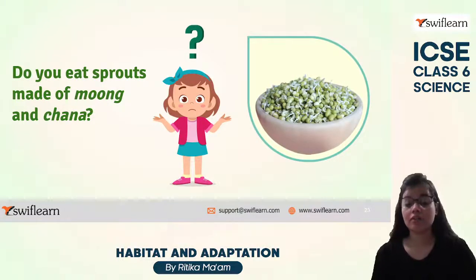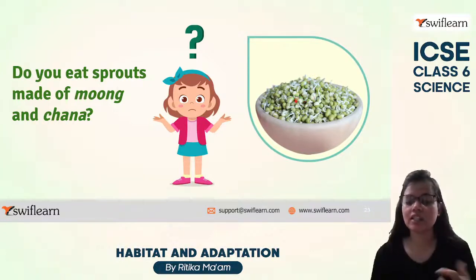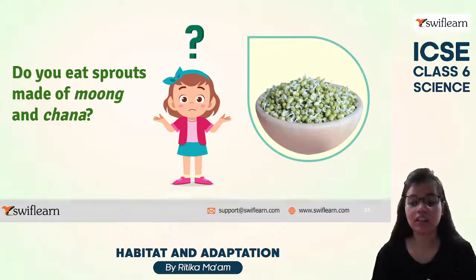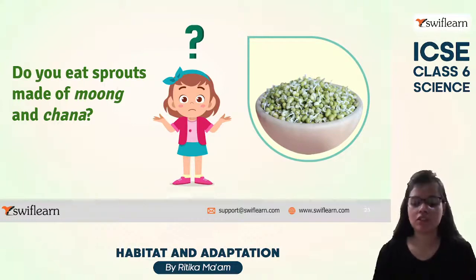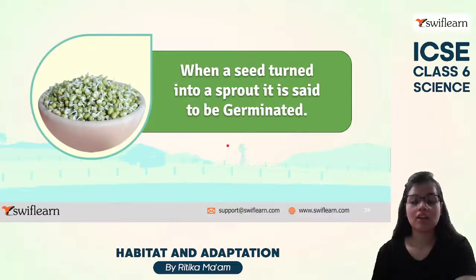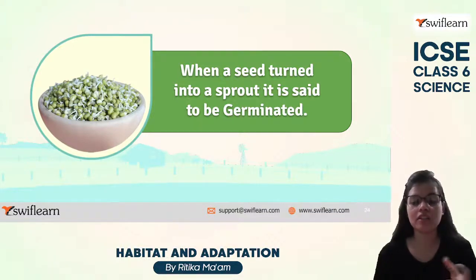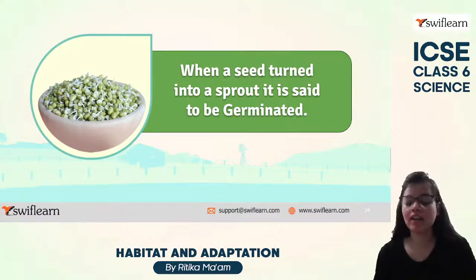You might have eaten sprouts at some point — they are a very healthy food made up of moong or grams. These are actually germinated seeds. Whenever seeds are germinated, they turn into sprouts, and they are again very healthy.